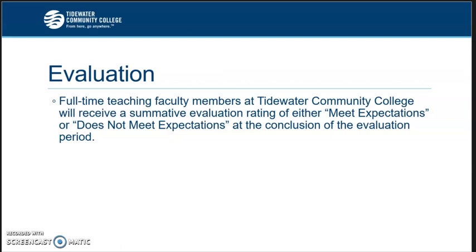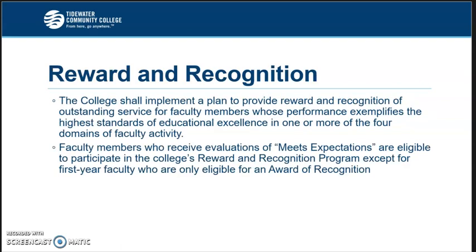The evaluation is where your Dean or Director will say you either meet or do not meet expectations. Your learning objectives can be revised over the course of time. For instance, one year I said I would be on a committee, but I joined another committee, so my Dean and I just edited the name so I still met my objectives. The reward and recognition program is where outstanding service can be recognized. Faculty members who meet expectations can participate and nominate other faculty members for awards — some are certificates, some are plaques, and some are even monetary.